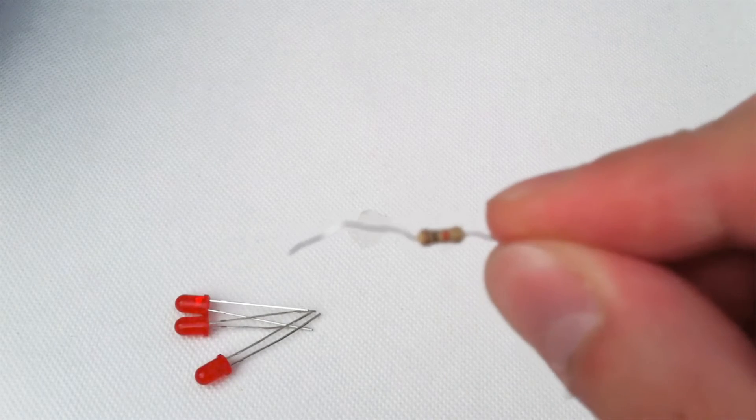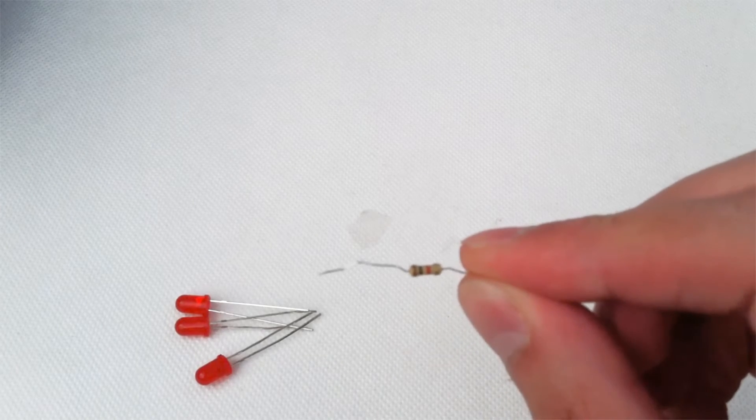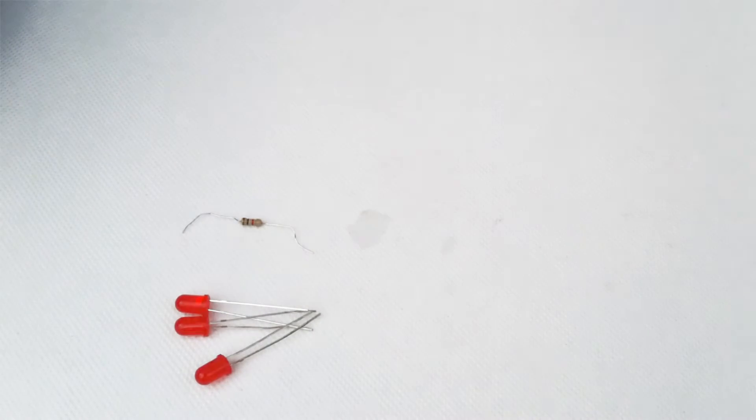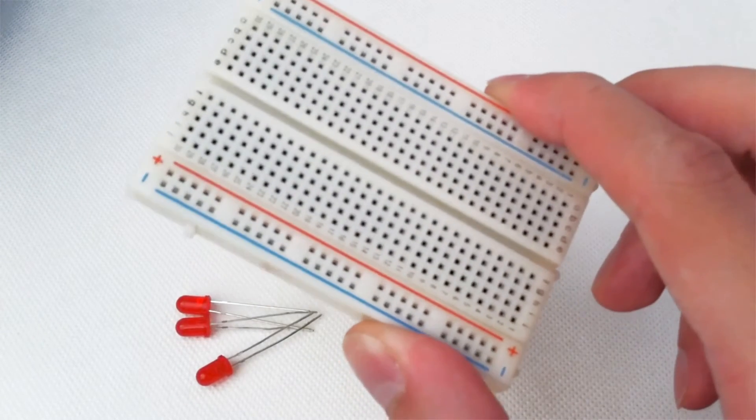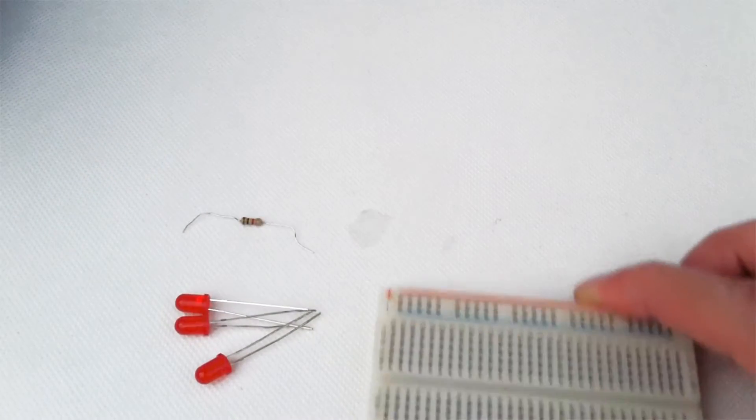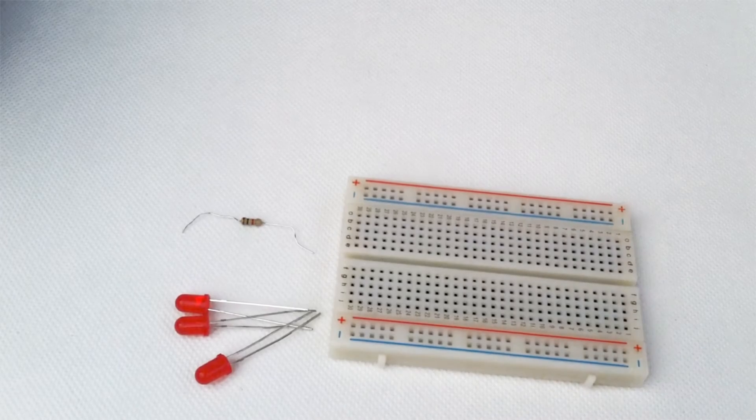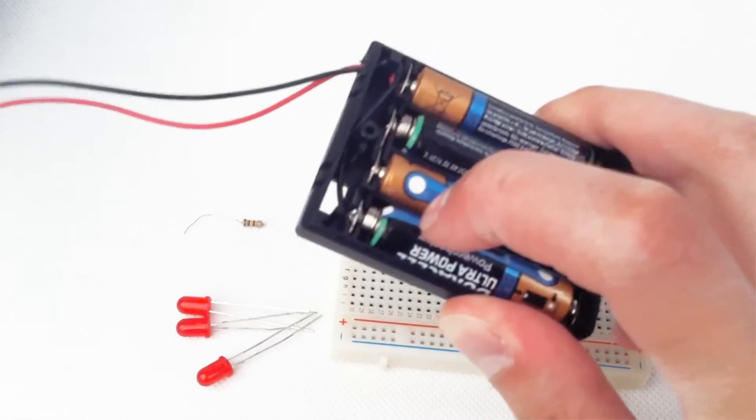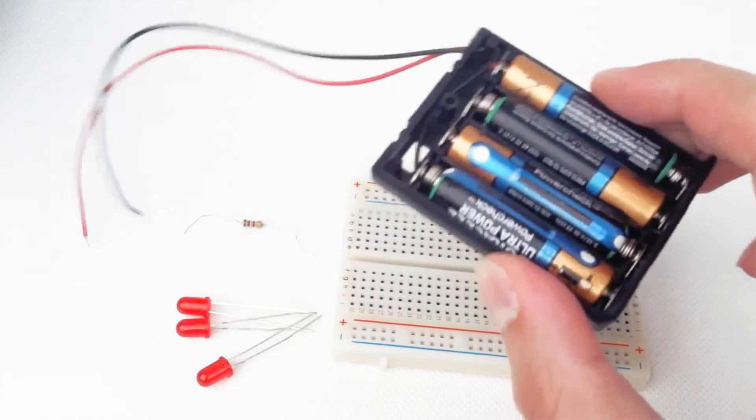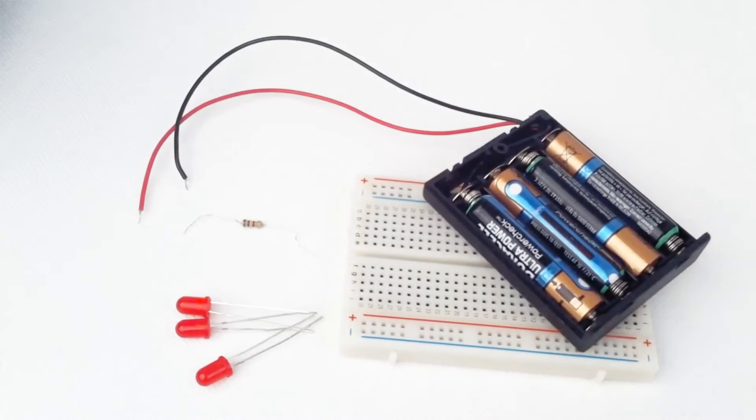We need a 1000 ohm resistor—you can see the colors brown, black, red—a standard 400 point breadboard, and of course our 6 volt power supply given by four AAA batteries in a four AAA wide battery holder. Now let's start our project.